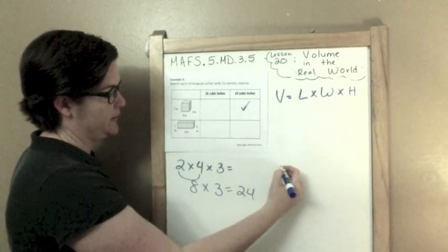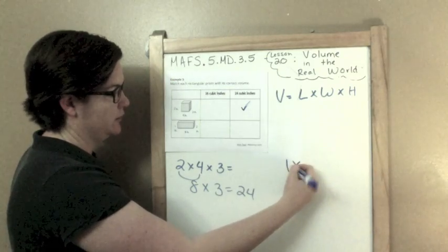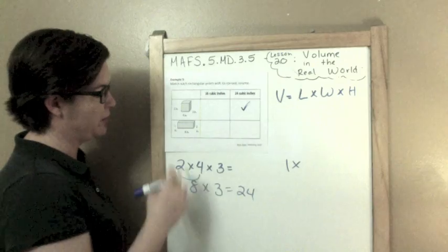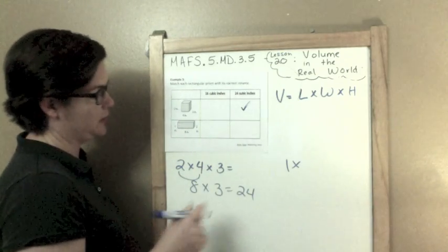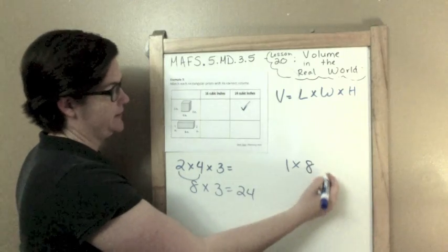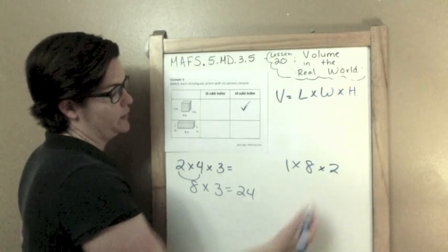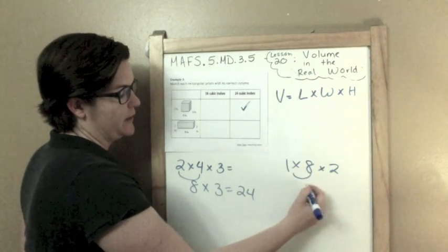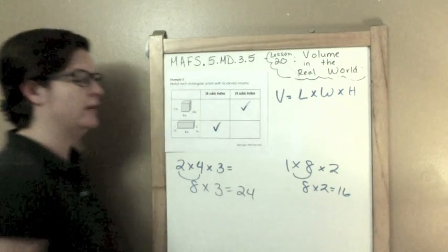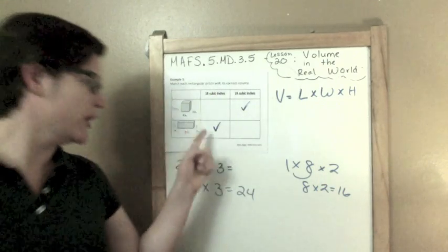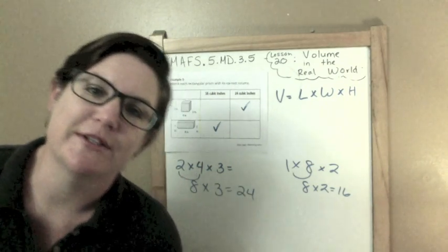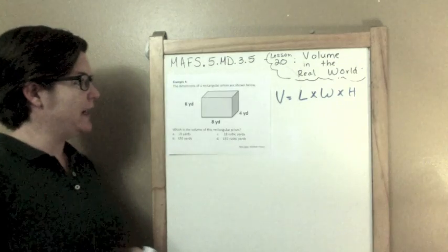Now, the next one says we have a height of 2. Again, it doesn't matter the order that I write these in because of the associative property of multiplication. Our length is 8 and our width is 2. 1 times 8 equals 8, 8 times 2 equals 16. There. Notice that I didn't just put a check right there, that I actually made sure to solve it. That's what good mathematicians do. They make sure that they're accurate.